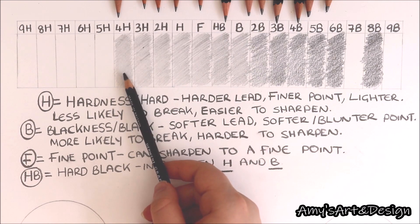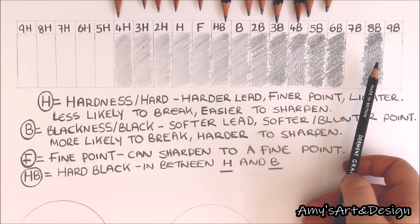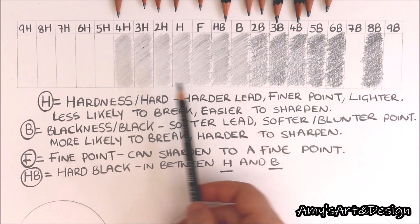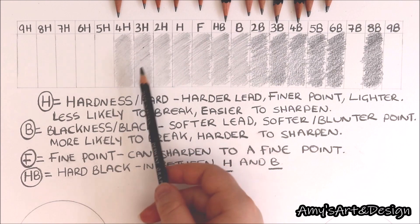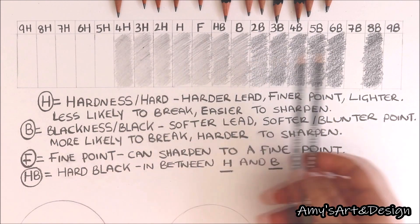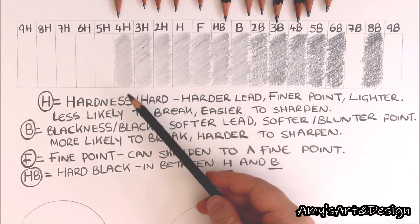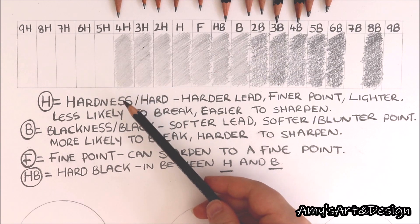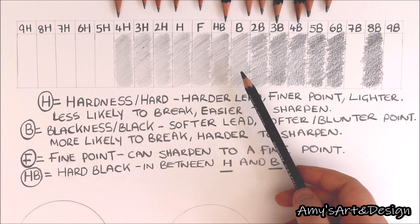Finishing up the gradient swatches — can you see the difference between the lightest and the darkest shades? The 4H pencil on the far left is much lighter than the 8B pencil on the far right. The 8B is a lot darker, so you'll be able to get much darker values and contrast in your drawings using that pencil.